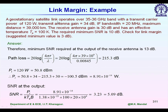We have a geostationary satellite link operating over the 35 to 36 gigahertz band, with a transmit carrier power of 120 watts, transmit antenna gain of 34 dB, IF bandwidth of 20 MHz, and maximum distance of 39,000 kilometers. The received antenna gain is 30 dB and the effective temperature Te equals 100 kelvin.